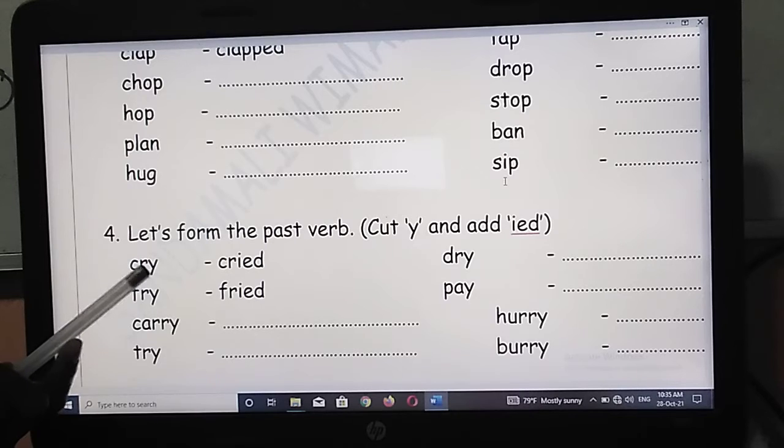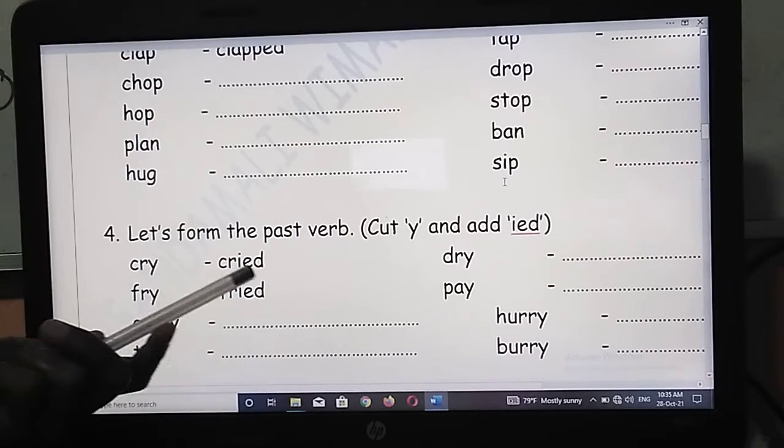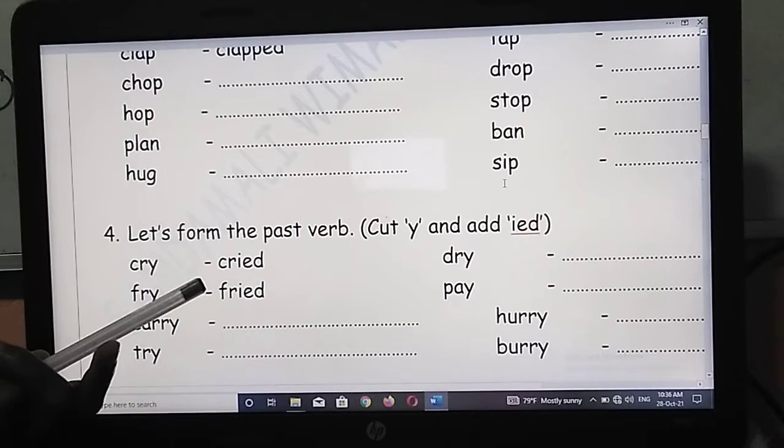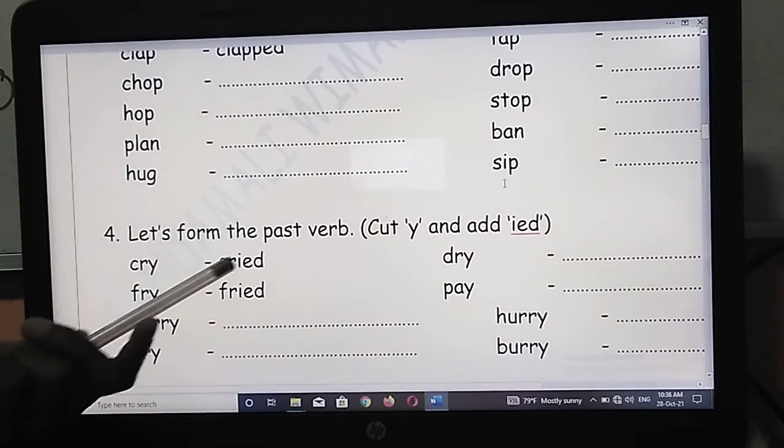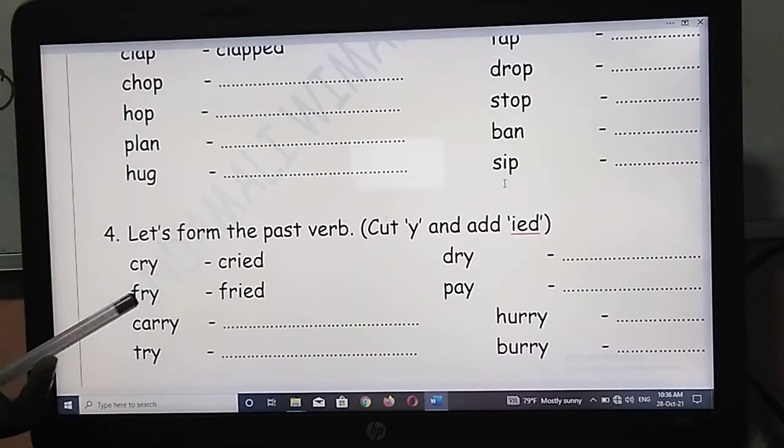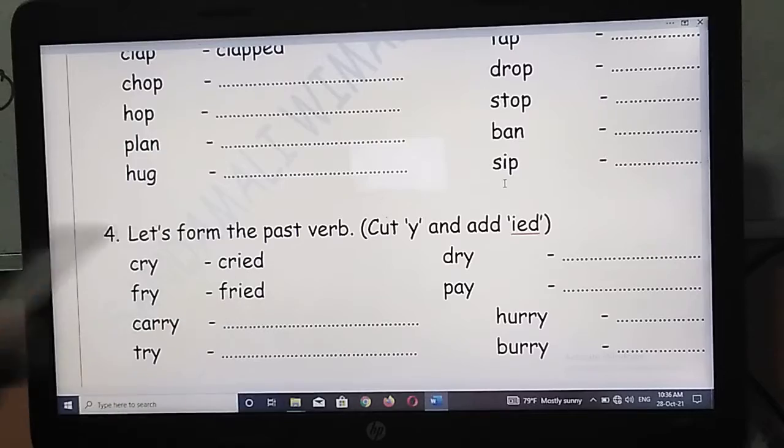Other letters are called consonants. Then when there is a consonant before Y, we can change Y into I and add ED. Or you can remove Y. Then add I, E, D. Cut Y and add I, E, D.